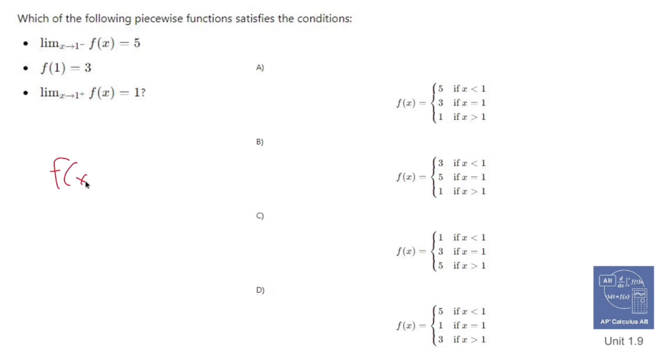So f of x is going to be some type of 5 when x is less than 1. When you plug in 1, you get 3. And when x is greater than 1, because it's approaching it from the right side, you get 1.